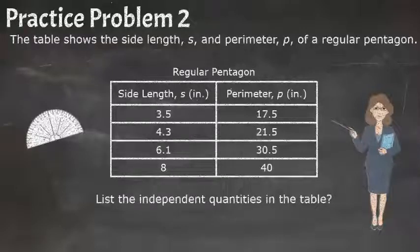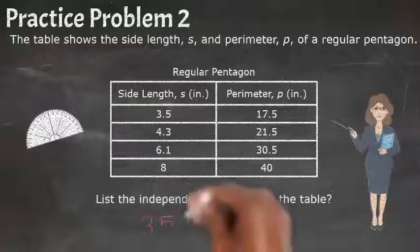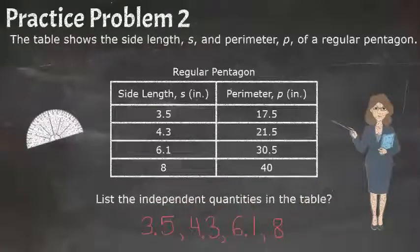So if we want just the independent quantities, we want to list the side lengths: 3.5, 4.3, 6.1, and 8. Those would be all our independent quantities.